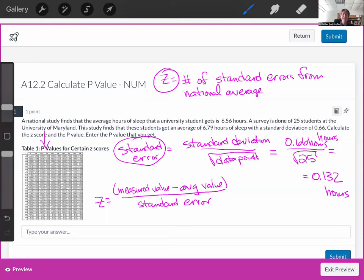To find z, my measured value is... the average hours is 6.56, that's my average value. My measured value for my students is 6.79. And my standard error is 0.132. So I get my z value now.